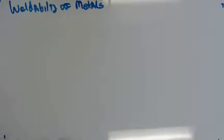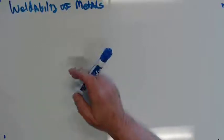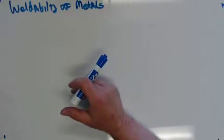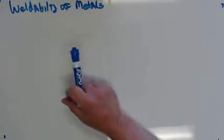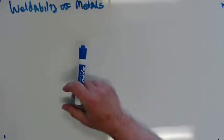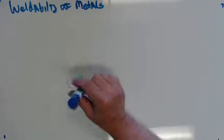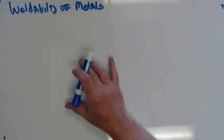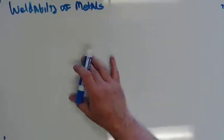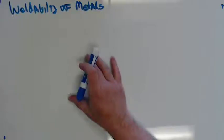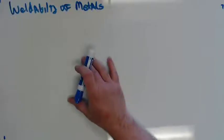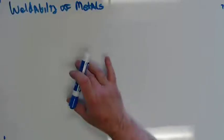So, weldability. AWS definition of weldability is the capacity of a metal to be welded under the fabrication conditions imposed into a specific, suitably designed structure and to perform satisfactorily in the intended service. So I can weld on anything. To AWS, weldability means it's actually going to work and perform its intended service. That's the big difference. You can weld on anything, doesn't mean it's weldable.